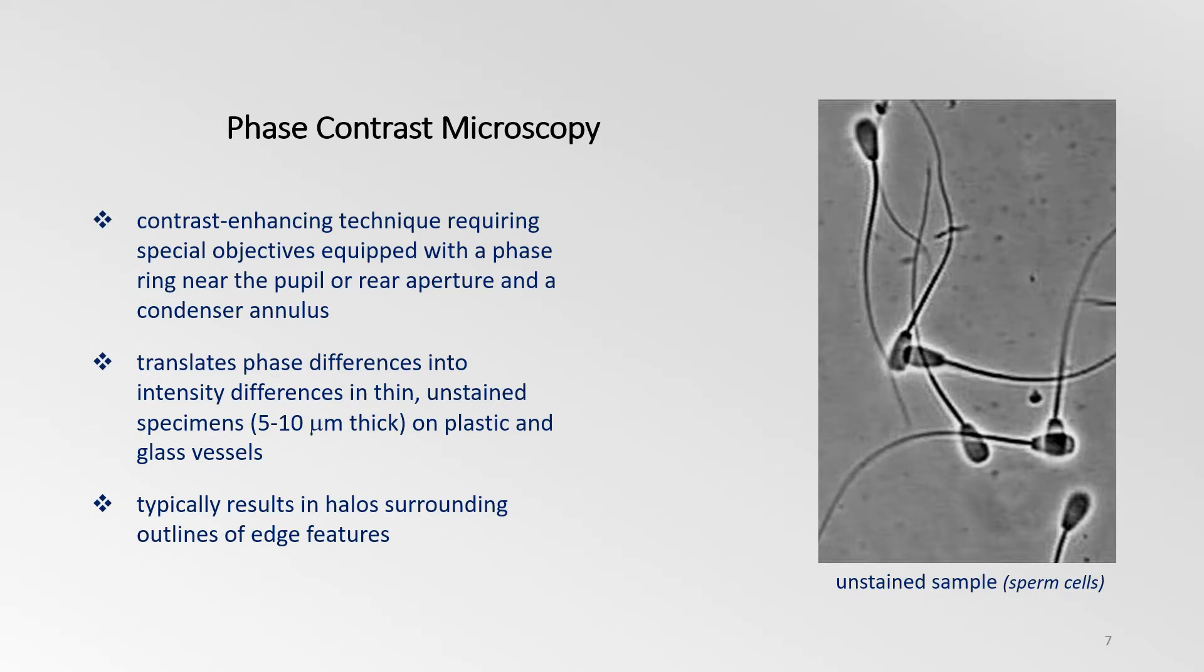Phase contrast is a technique that deals with this problem. It works by using special objectives with a phase ring and a condenser annulus to create a phase shift of light that results in an image with greater contrast. This brightfield method is insensitive to polarization and birefringence effects, which is a major advantage when examining unstained samples like living cells growing in plastic tissue culture vessels. A halo light ring is a natural result of using phase contrast, but most people consider this as an artifact, a distortionary effect that takes away from image quality.